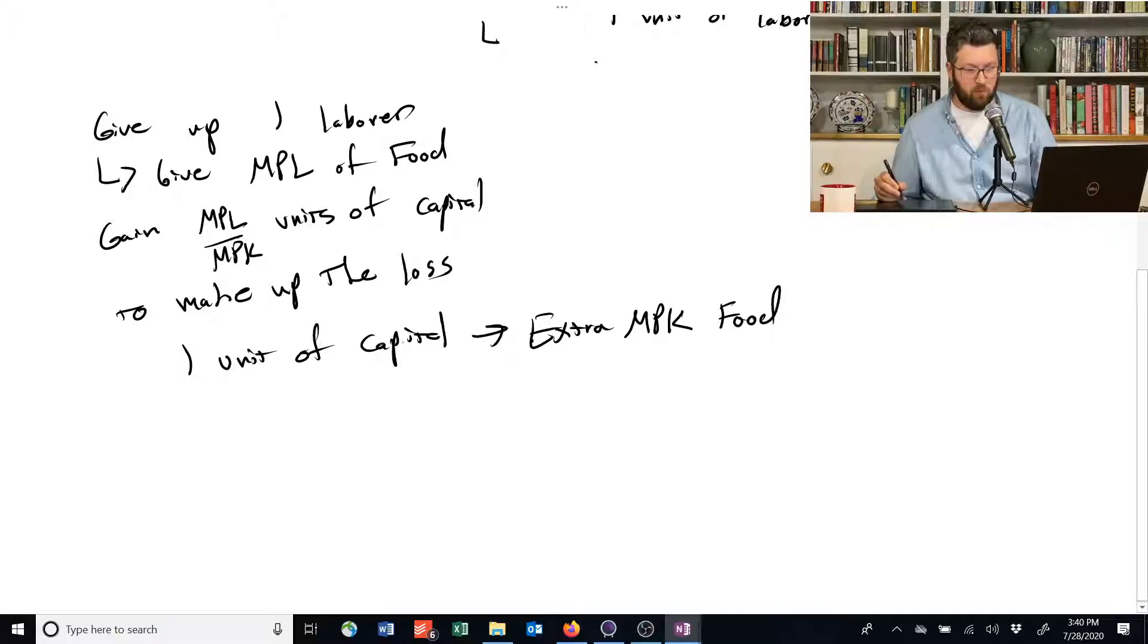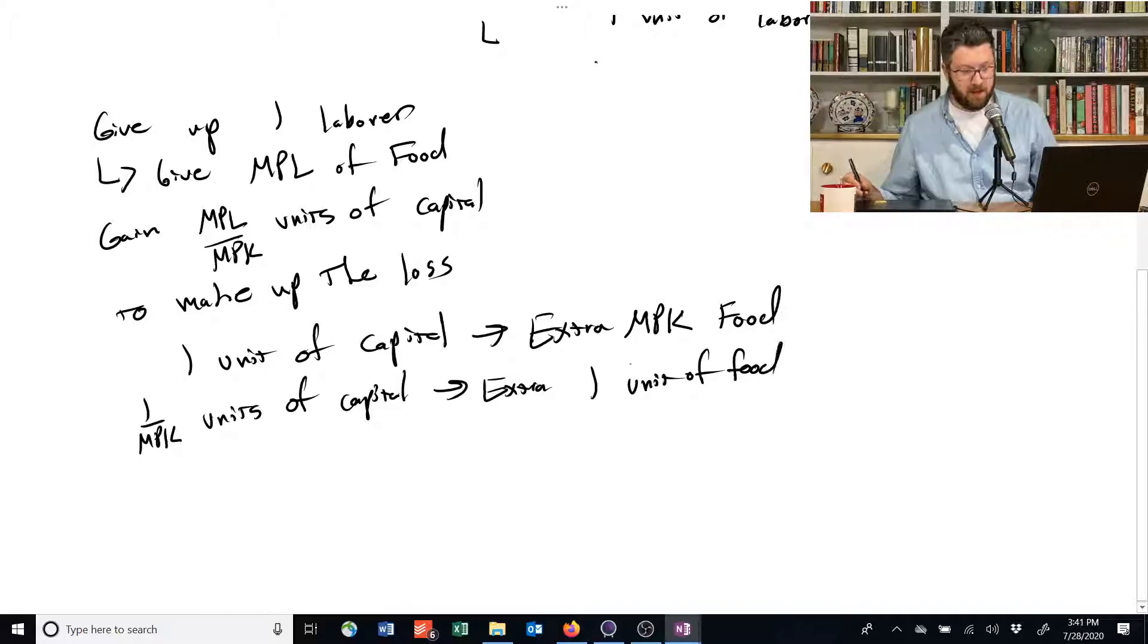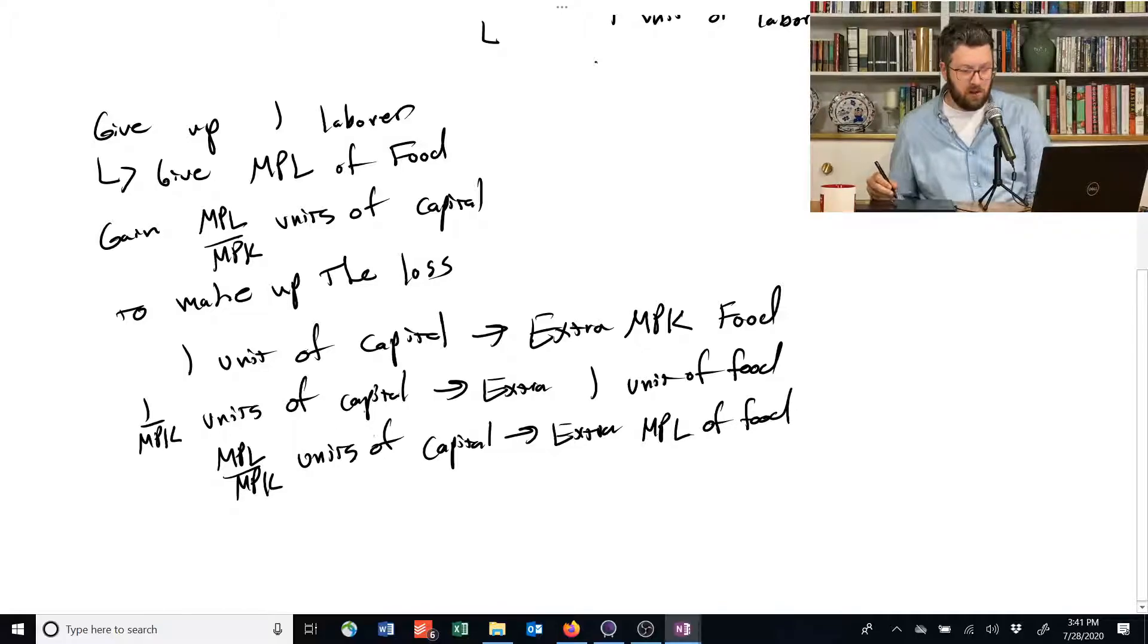But if instead of one unit of capital, we get only one over the marginal product of capital units of capital, then that means we obtain an extra one unit of food. I'm just dividing both sides by MPK now. And if we gain MPL divided by MPK units of capital, well, that's going to obtain for us an extra MPL of food, an extra marginal product of labor of food. And that's just because now I've multiplied this last equation by MPL.